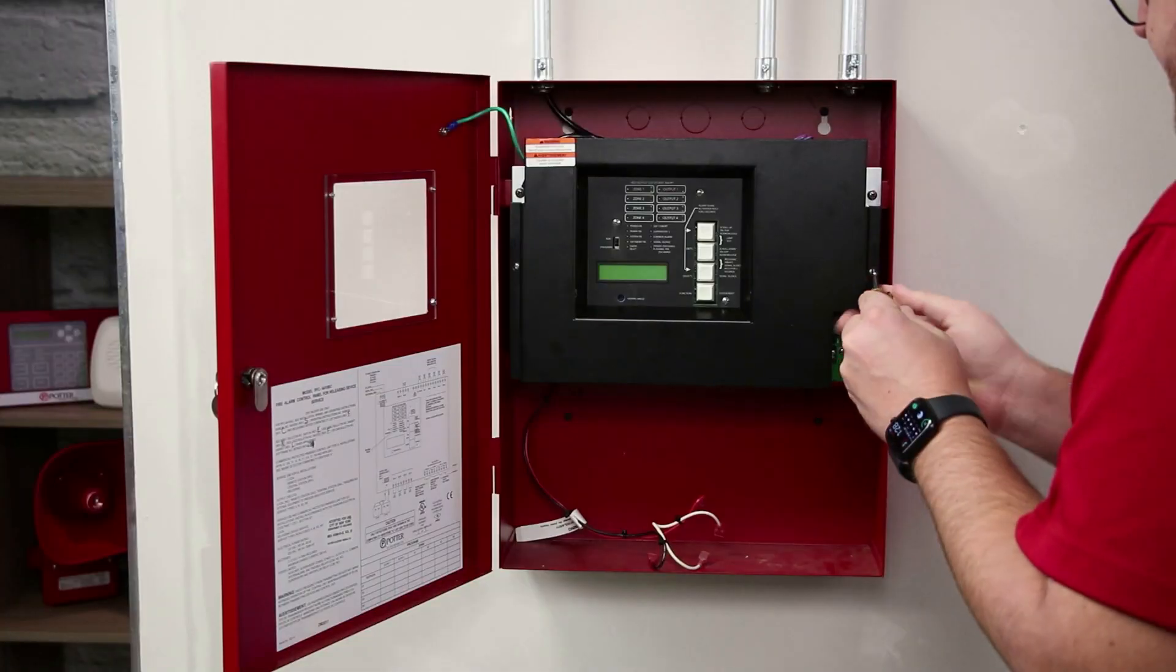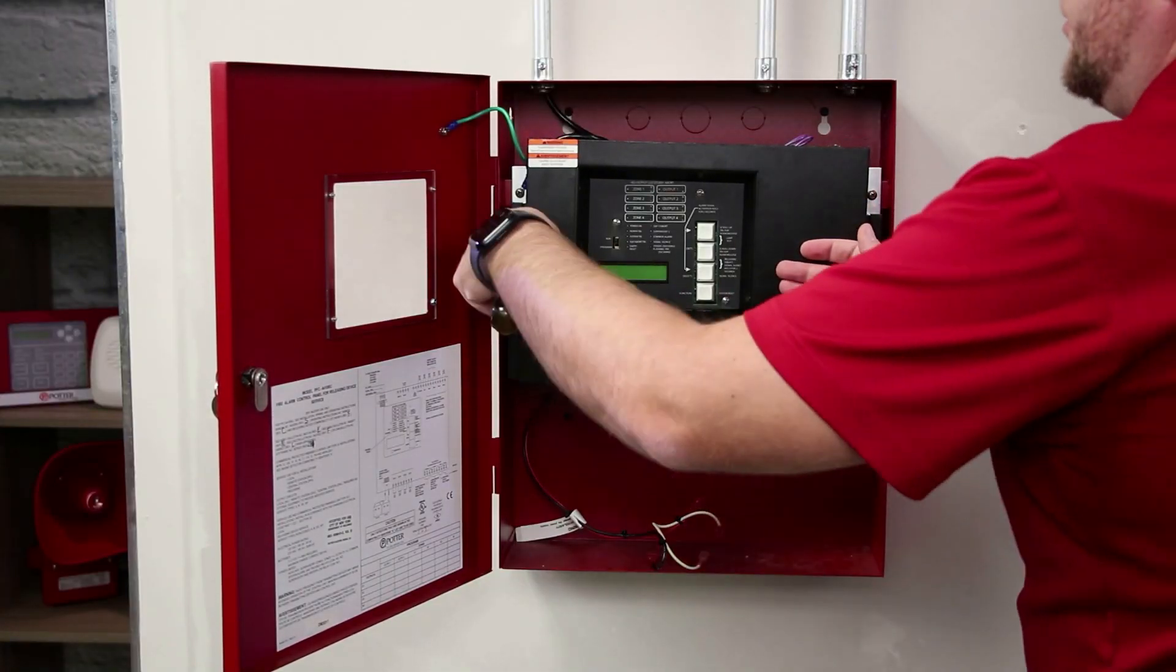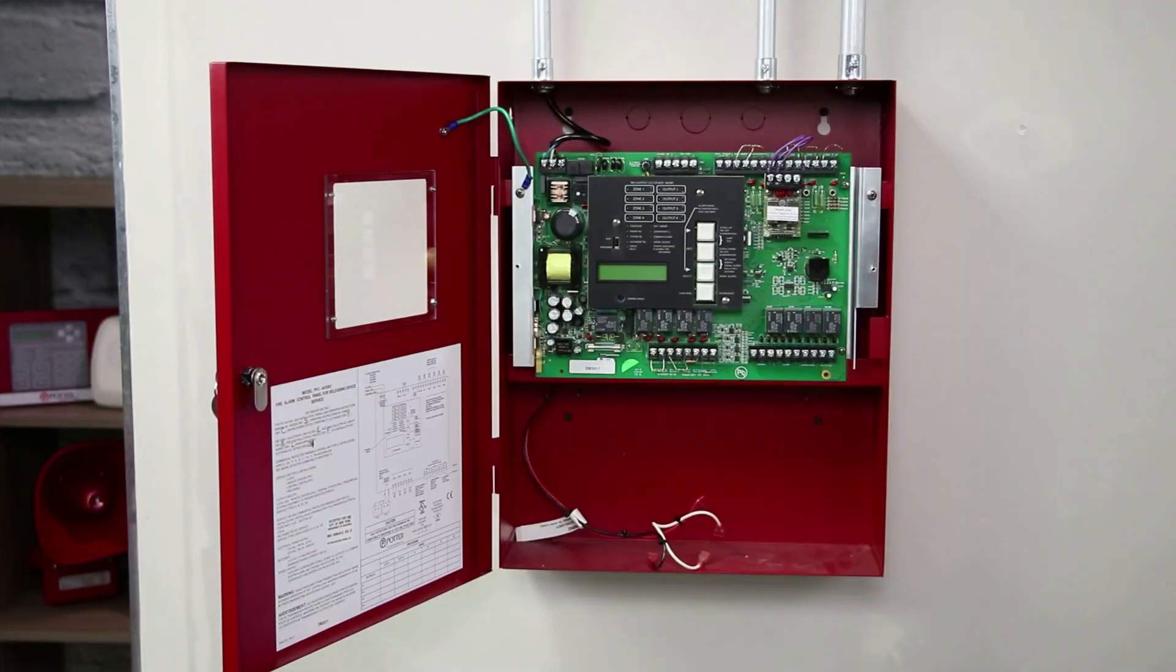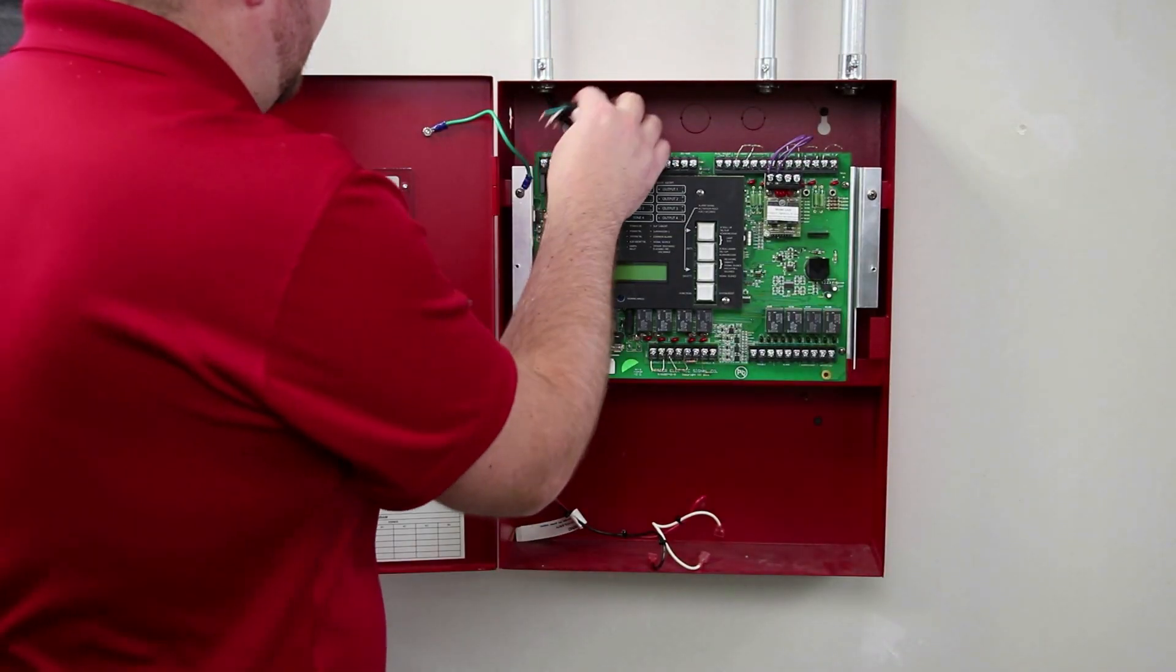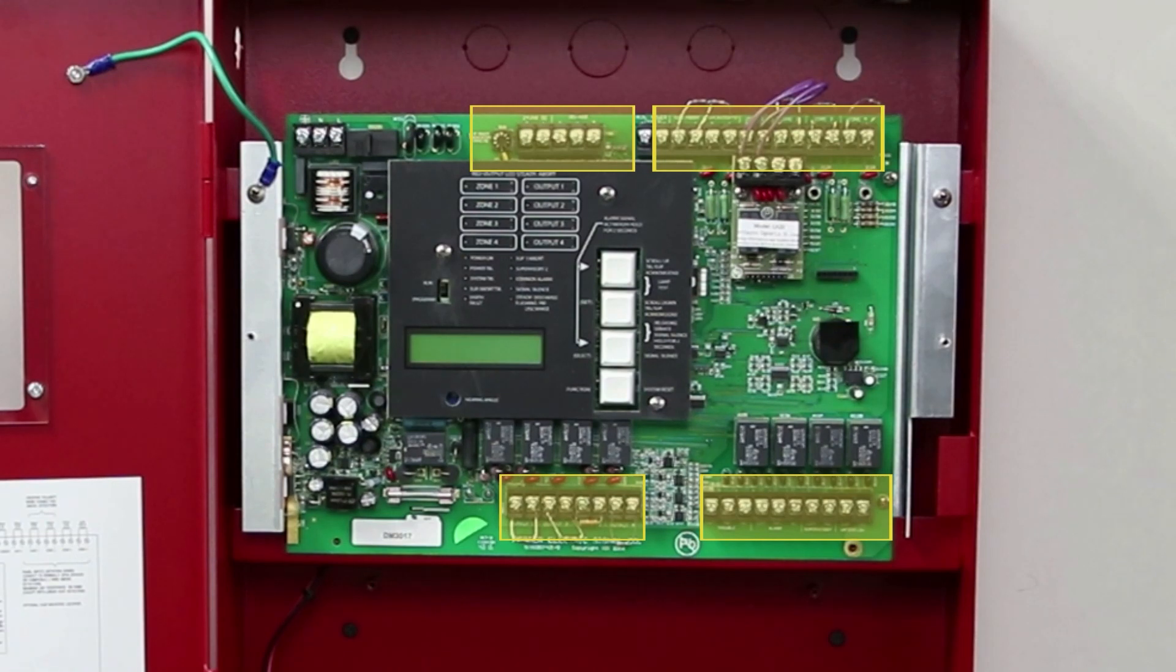Next, you will need to remove the dead front to gain access to the AC power terminals. Disconnect the AC power connections at the panel. Disconnect any zone wiring as well.